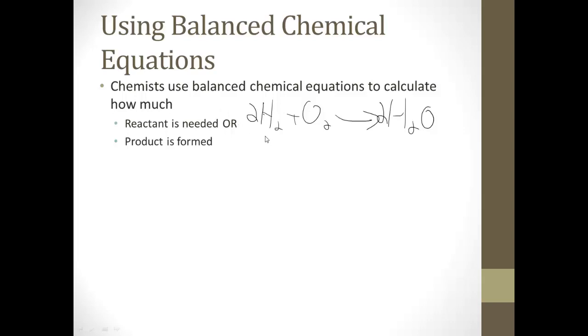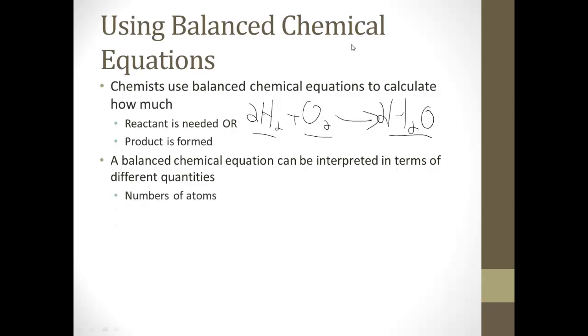And we can see that the reactants that we need are hydrogen gas and oxygen gas, and that's going to make water. And we can see that we need twice as many moles of hydrogen gas as we're going to need of oxygen gas. And we're going to get a little deeper into that in just a moment. So a balanced chemical equation can be interpreted in terms of different quantities. Now at the simplest level, we can see the numbers of atoms.